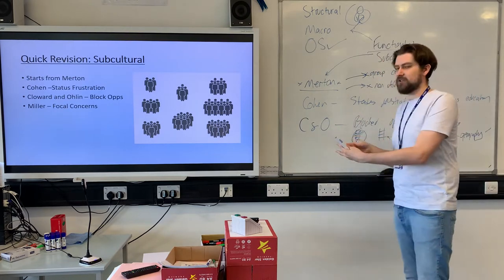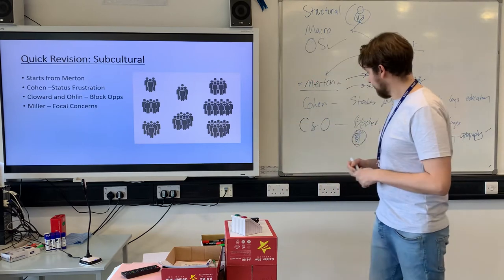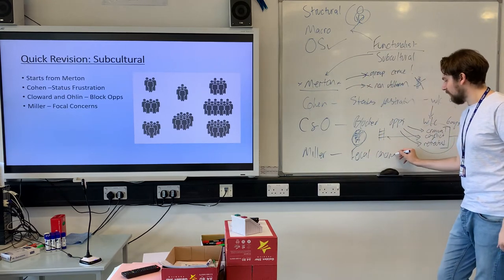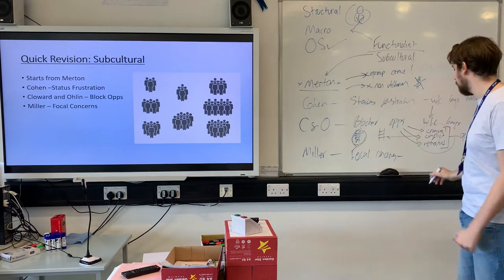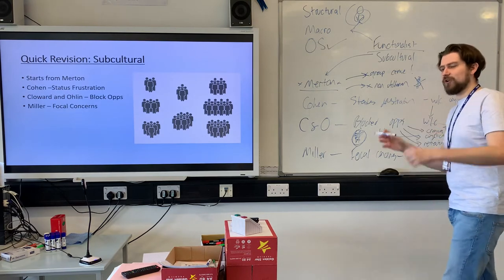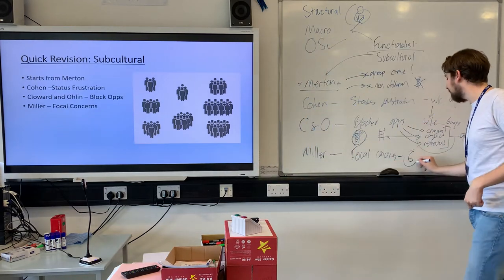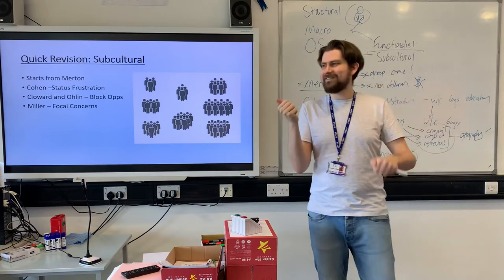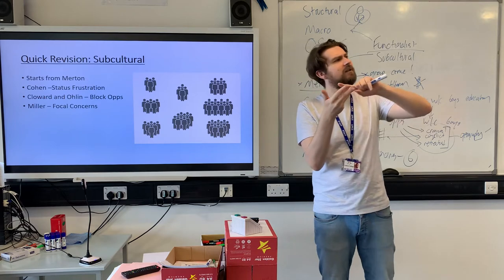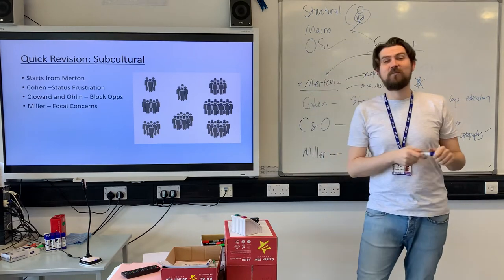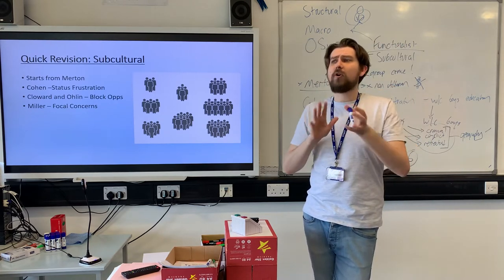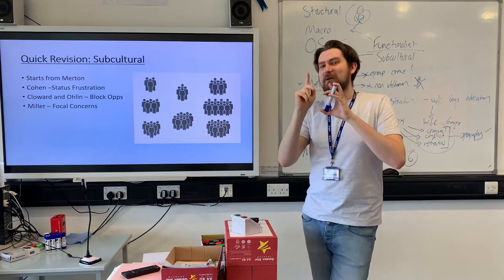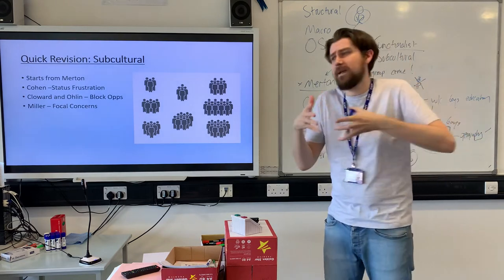Miller is the final one and probably the least functionalist of all of these. He's going to talk about the focal concerns of groups of working class lads that makes crime inevitable. Link back to Durkheim here so you can see he's a functionalist. There are six focal concerns: trouble, toughness, smartness, fate, autonomy, and excitement. You don't need to remember all of them - pick a couple of the more profound ones and go into some depth about them.